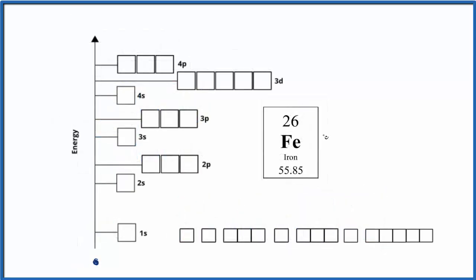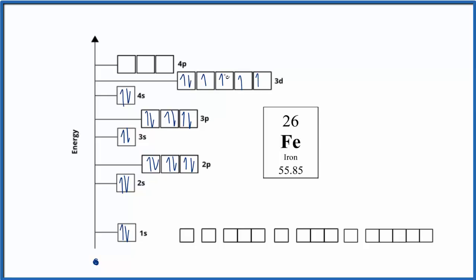Pause and give iron a try. We have 26 protons, so 26 electrons. Spread them out — when we get to the d orbital we're going to spread them out first, since d can hold up to 10, and then double them up. We've used all 26 electrons. This is our orbital diagram for iron, and if we wrote the electron configuration it would look like: 1s² 2s² 2p⁶ 3s² 3p⁶ 4s² 3d⁶.